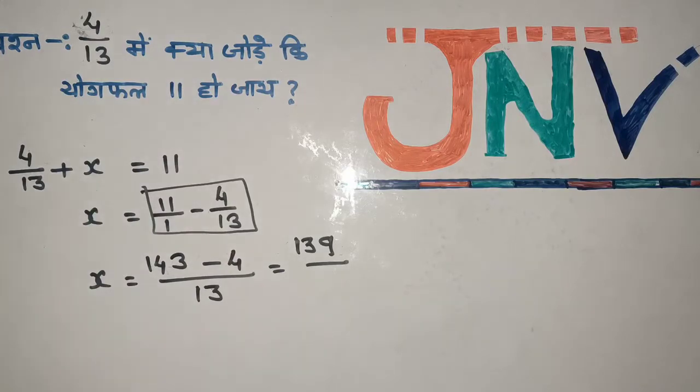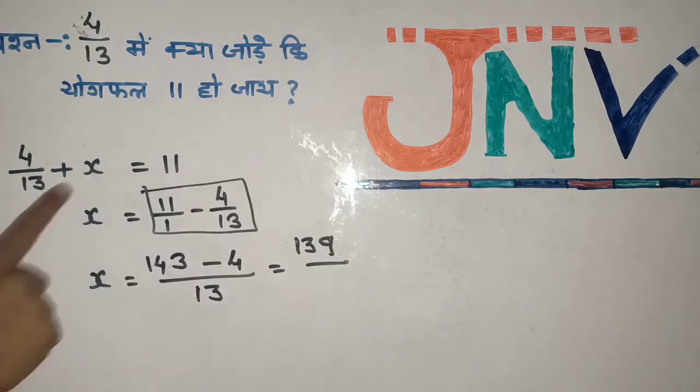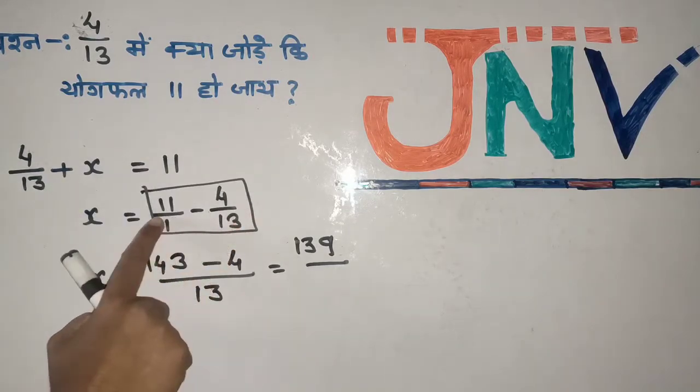We need to solve for this. When we subtract, we get 11 minus 4/13. Now we calculate: 143 minus 4, divided by 13. That gives us the answer.